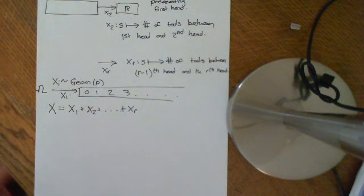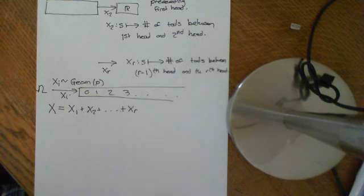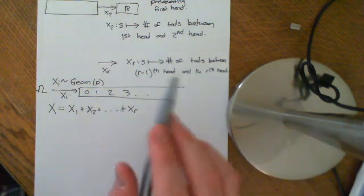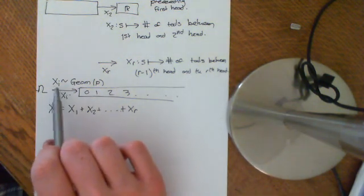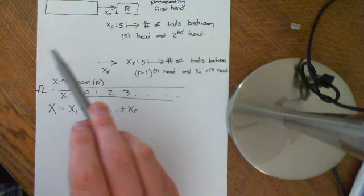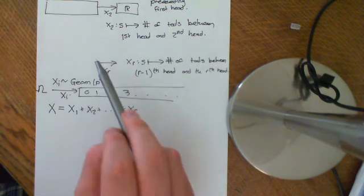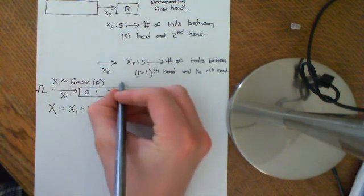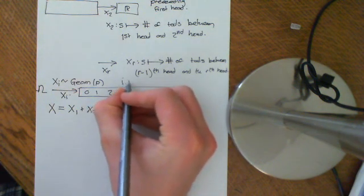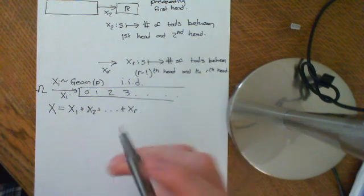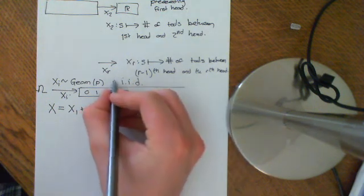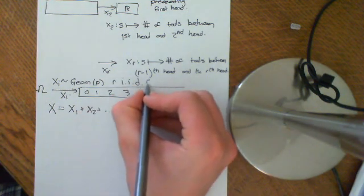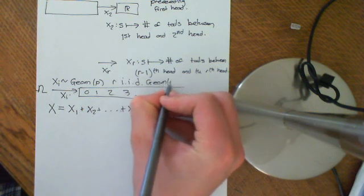Welcome to part two of this video on the negative binomial distribution. In the first video, we showed that we could define these random variables X_i on our probability space, and that all of them were identically distributed. It turns out that these are also independent, so they are independent and identically distributed — IID. So we have r independent, identically distributed geometric distributions.